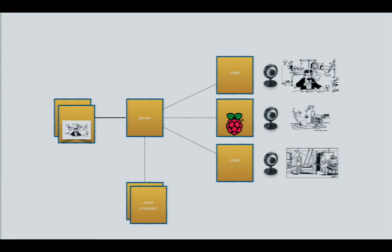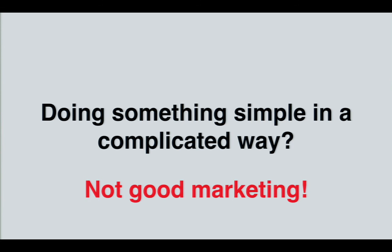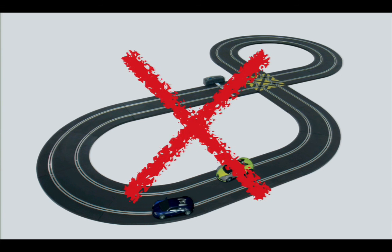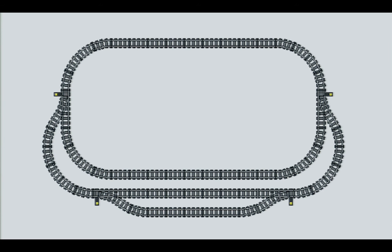That idea got killed. Somebody made the remark that doing something in a complicated way might not be the best advertisement for OSGi. Then we came up with the idea of a racetrack where we would do measuring and eventing. We killed that one too because positioning things in time and reacting to it turned out to be really hard — we wanted to use RFID, which is a story I'll get to. The positioning was too hard. So what's left? Hey, I'm a boy — I played with Lego when I was young. What is more interesting than a Lego train?